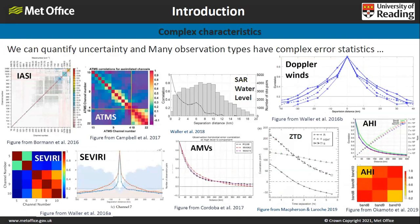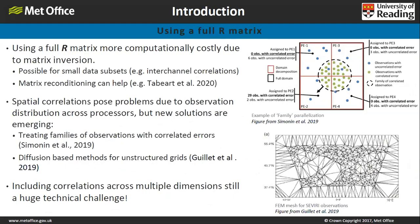There are two challenges. One is quantifying the uncertainty, and there's been a lot of work over the last five years to quantify observation uncertainties for different instruments. This slide shows an array of that work: checkerboard inter-channel correlation matrices for satellite data, spatial correlations for AMVs and Doppler winds, and even temporal correlations for zenith total delay. The other challenge is actually using a full R matrix — it is more computationally costly, but it is possible for small datasets such as inter-channel correlations, and matrix reconditioning can also help.